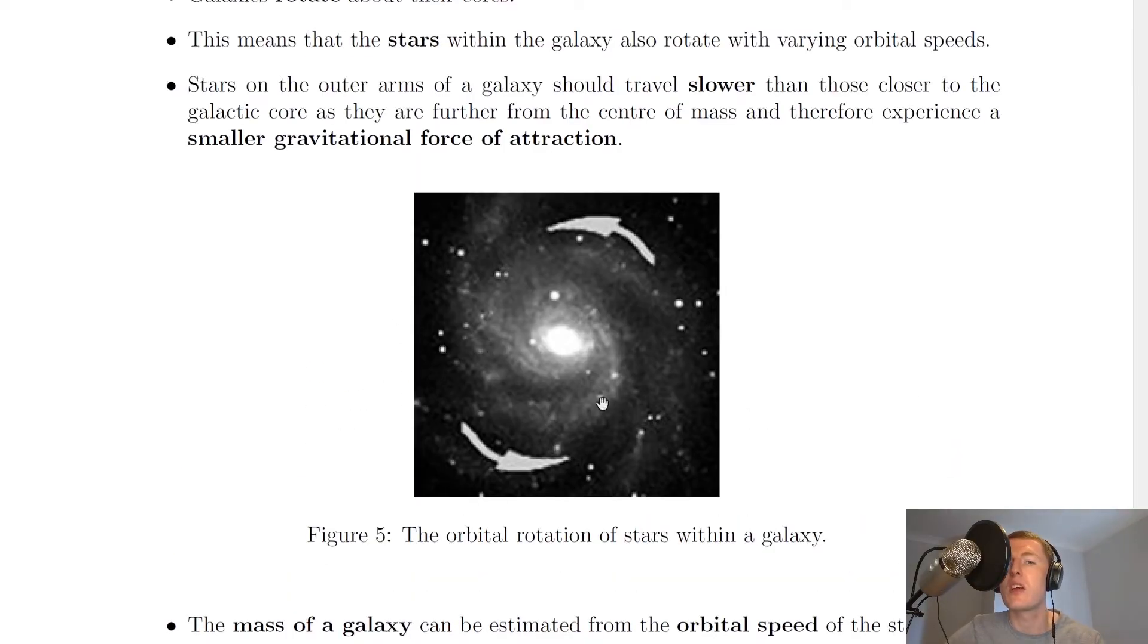So we've got a galaxy here rotating about its core and the stars on the outer arms should be travelling slower than the ones closer to the centre.